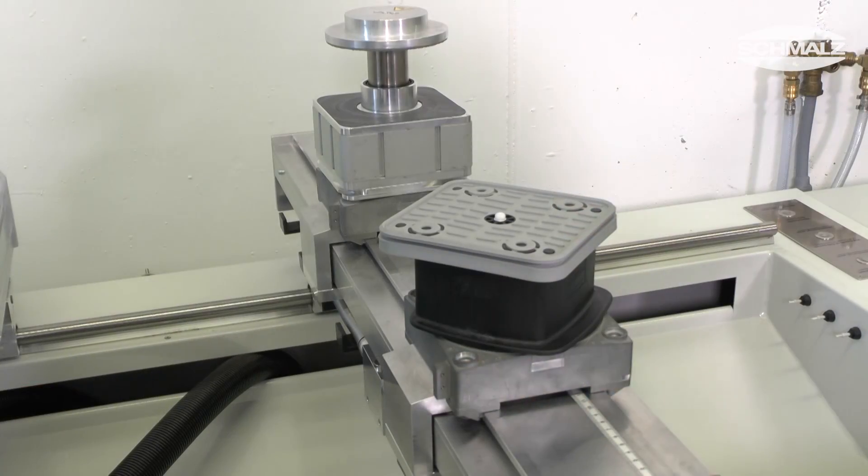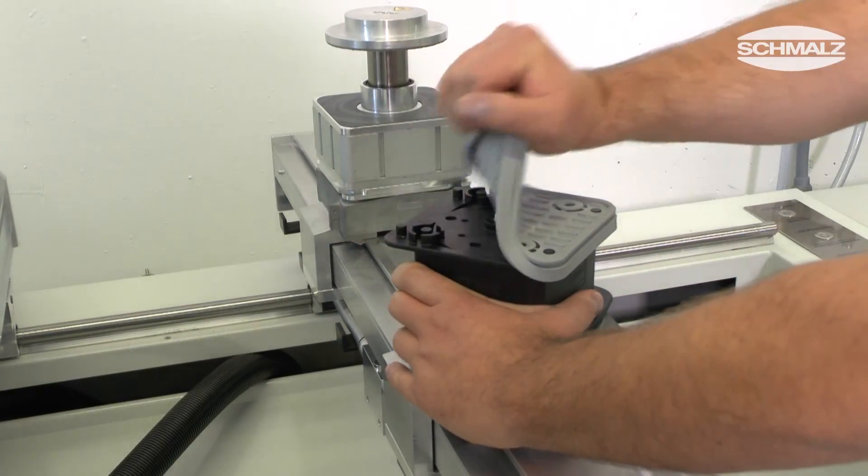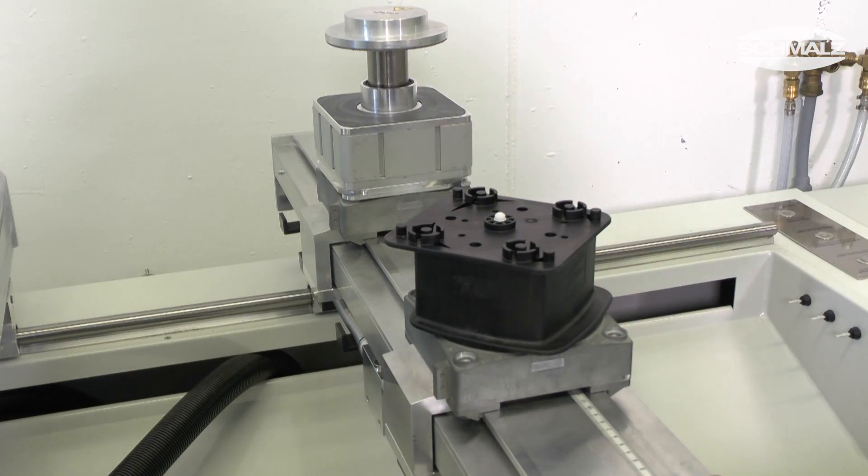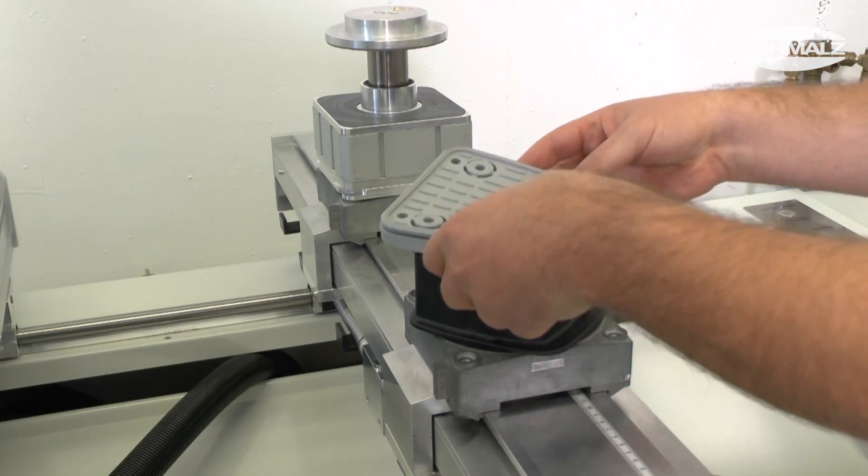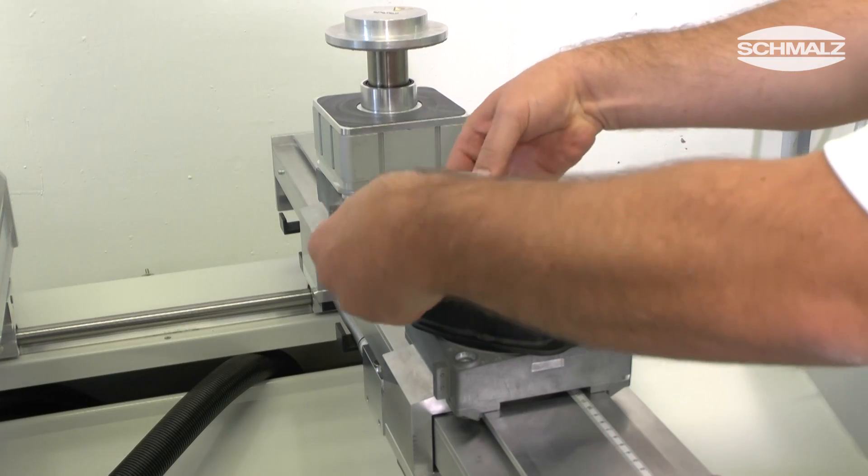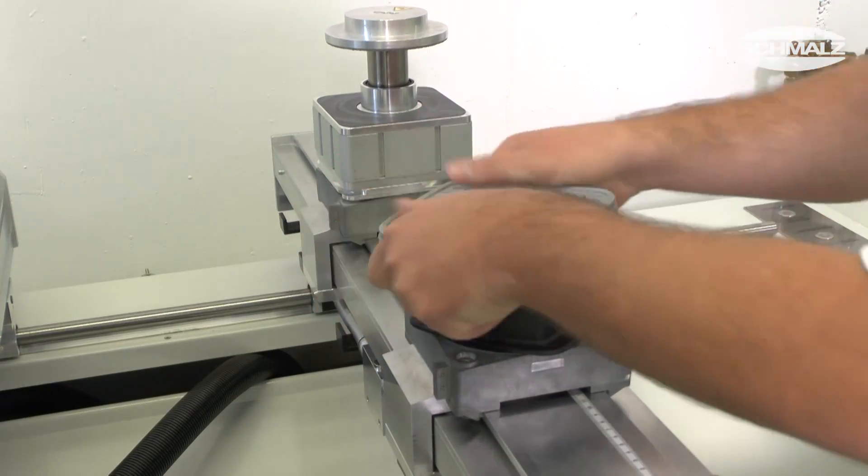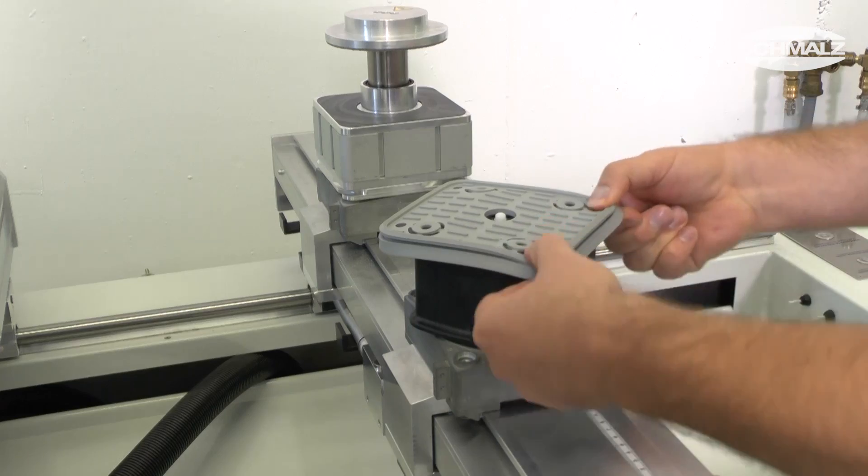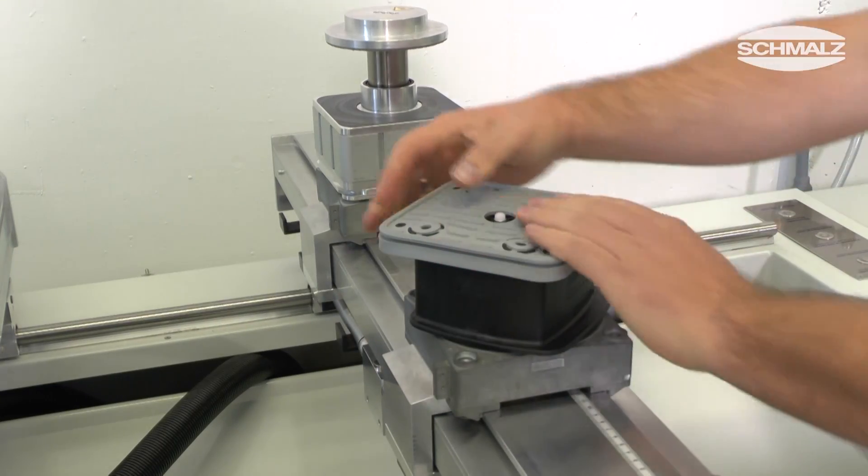The suction area of each Schmalz vacuum block is made up by a grey suction plate. After a collision, the suction plate can simply be replaced, so you don't have to invest in a whole new vacuum block. Within minutes, you are ready to go back to work.